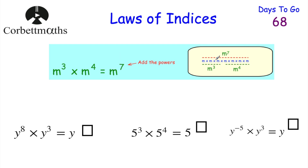Let's check and see why. If we had M cubed, that's M multiplied by M multiplied by M. And M to the power of 4 is M multiplied by M multiplied by M multiplied by M. Multiplying them together, we get M times M times M times M times M times M times M — so that would be M to the power of 7. So if you're multiplying things with the same base, you can just add the powers.